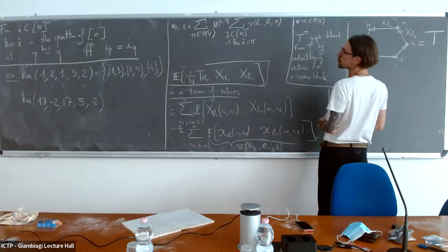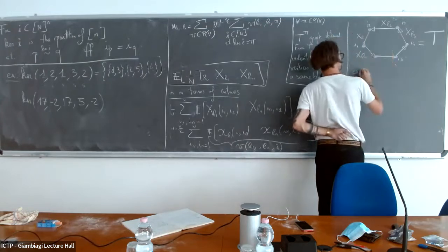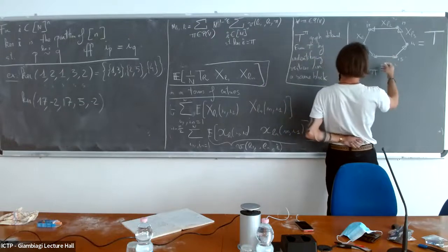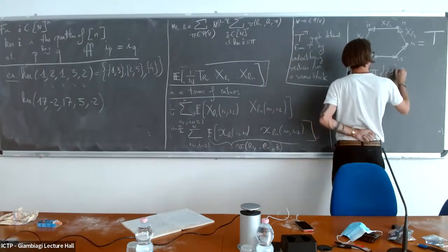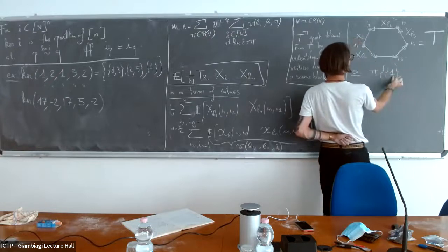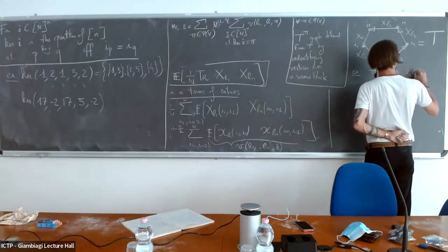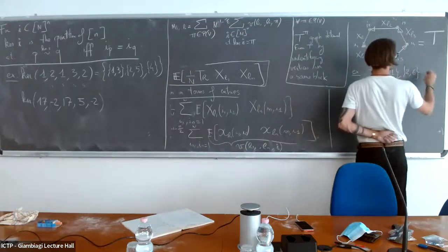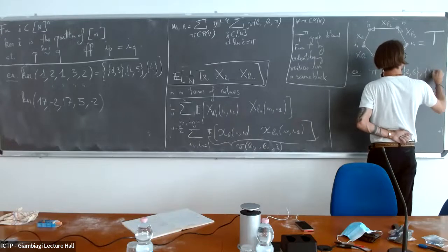For example, if pi puts vertex 1 as a singleton, vertices 2 and 6 in the same block, and so on, then single vertices create their own vertex in T^pi, while a group of two vertices results in a single vertex. The edges of T^pi are induced by the original edges: an edge between two vertices in the same group becomes a loop, and edges between different groups become edges between the corresponding new vertices.